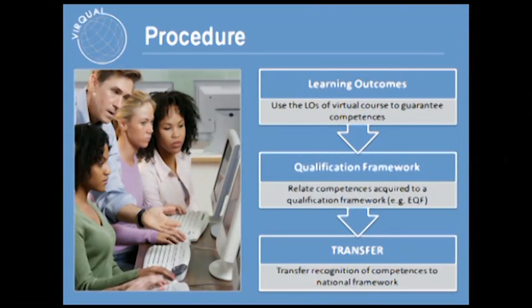But even when you are going for formal learning — like taking a specific course in some area — it's not easy to have those qualifications recognized. You can put it in your CV, but to have it recognized by an institution for credits or for progression in further studies is still not easy. This is what Virqual is talking about. The main procedure in Virqual is the common language: learning outcomes. We need to have courses well defined in terms of learning outcomes so that all people involved know what we're talking about.